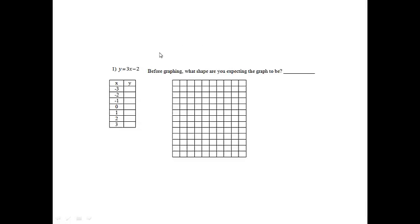Question 1, I know the directions were to complete the table and the graph. We've got y equals 3x minus 2, and it says before graphing, what shape are you expecting the graph to be? And I know from looking at my function families, this is the linear function family, so I will expect to see some sort of line.